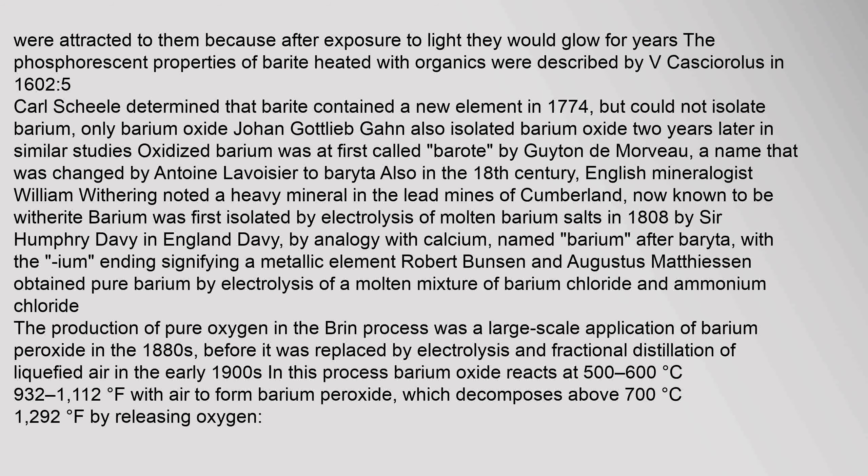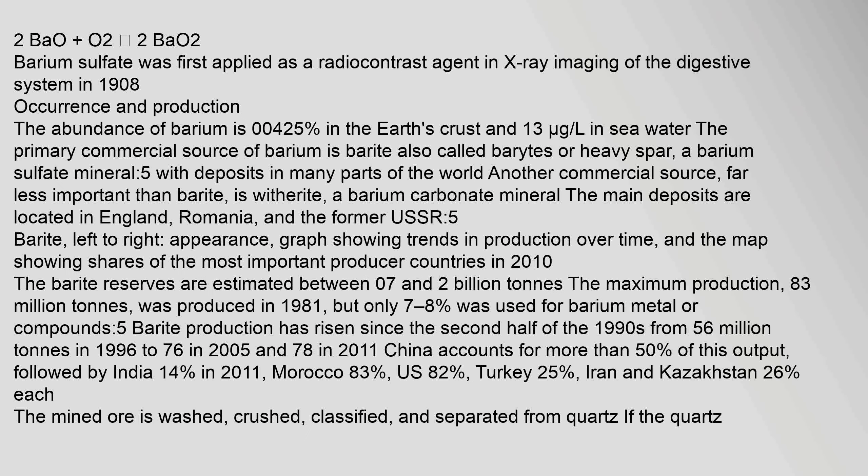Barium was first isolated by electrolysis of molten barium salts in 1808 by Sir Humphrey Davy in England. Davy, by analogy with calcium, named barium after 'baryta' with the '-ium' ending signifying a metallic element. Robert Bunsen and Augustus Matthiessen obtained pure barium by electrolysis of a molten mixture of barium chloride and ammonium chloride. The production of pure oxygen in the Brin process was a large-scale application of barium peroxide in the 1880s, before it was replaced by electrolysis and fractional distillation of liquefied air in the early 1900s.